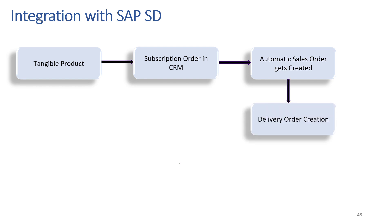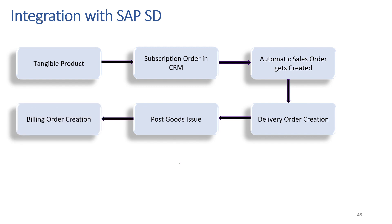This sales order can later be delivered by creating a delivery order. After the delivery order, we do post goods issue. As part of post goods issue, the product leaves our plant or shipping point. Once it reaches the customer, we can do billing order creation, which is done just as normal as we have been doing in SAP SD using the VF01 transaction.